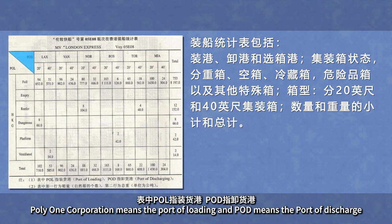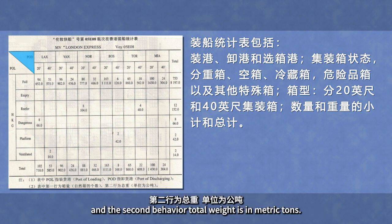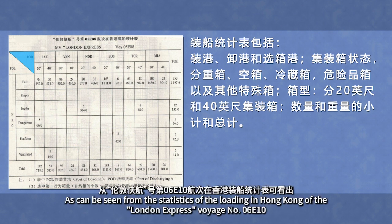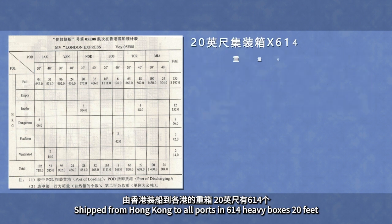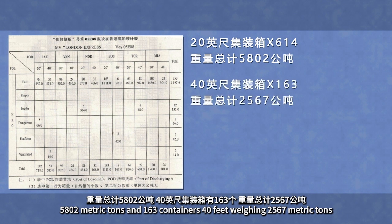表中的POL指装货港。表中的第一行为箱量，为自然箱的个数；第二行为总重，单位为公吨。从伦敦快航号第06E10航次在香港装船统计表可看出，由香港装船到各港的重箱：20英尺有614个，重量总计5802公吨；40英尺集装箱有163个，重量总计2567公吨。